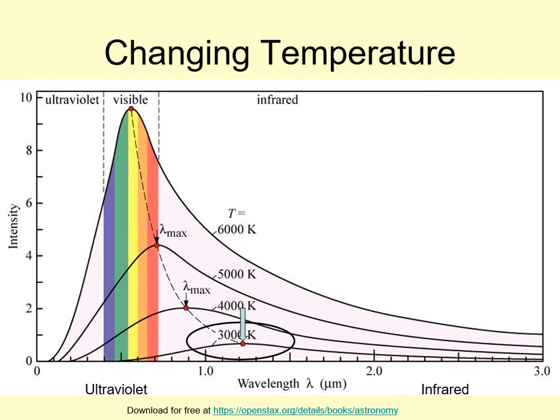So any object with a temperature of 3000 kelvins emits mainly infrared light, though it does produce some visible as well. You can tell that because the curve cuts across the visible wavelengths. Since it's higher on the red end than on the blue end, it looks yellow-orange to our eyes.